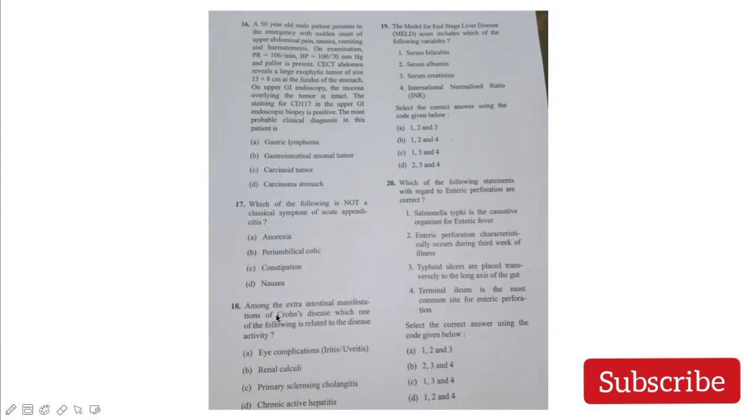Among extraintestinal manifestations of Crohn's disease, which is related to disease activity? Eye complications like iritis and uveitis are related to disease activity. Renal calculi, PSC, and chronic active hepatitis are not related. Other related conditions include pyoderma gangrenosum. The modified MELD score includes - if you think of MELD, remember CBI: creatinine, bilirubin, and INR. Serum albumin is not included.